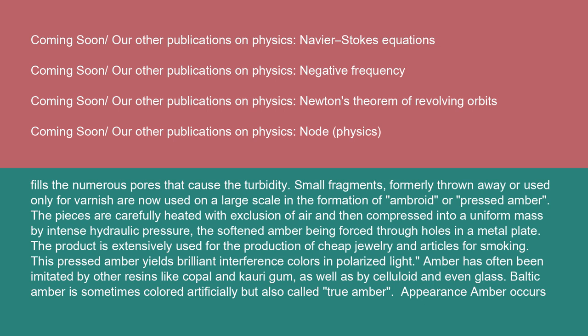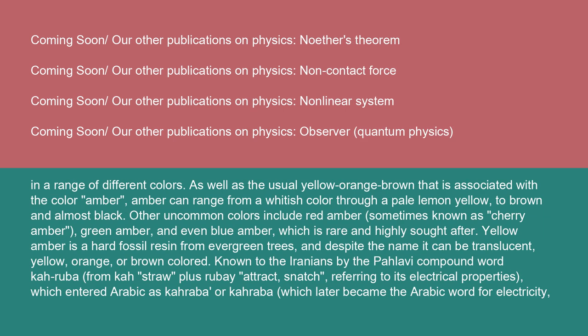Appearance: Amber occurs in a range of different colors. As well as the usual yellow-orange-brown that is associated with the color amber, amber can range from a whitish color through a pale lemon yellow to brown and almost black. Other uncommon colors include red amber, sometimes known as cherry amber, green amber, and even blue amber, which is rare and highly sought after. Yellow amber is a hard fossil resin from evergreen trees, and despite the name, it can be translucent, yellow, orange, or brown colored.